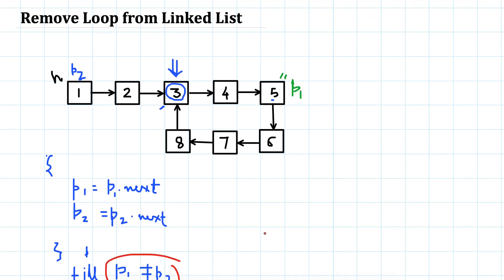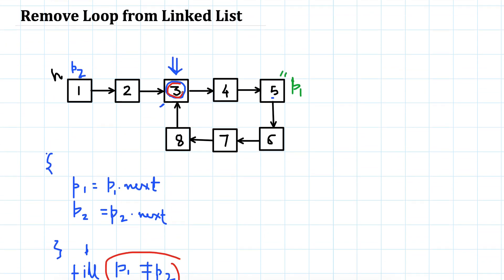The loop now terminates when p1.next equals p2.next instead of when p1 equals p2. Let's trace through the example: initially p1 is at head and p2 is at the meeting point. We check p1.next and p2.next — they are not equal, so both pointers advance. Then we check again: p1.next is 3 and p2.next is also 3, so we stop here.